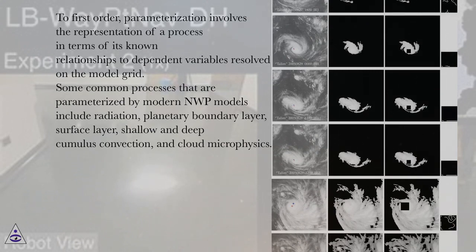Some common processes that are parameterized by modern NWP models include radiation, planetary boundary layer, surface layer, shallow and deep cumulus convection, and cloud microphysics.